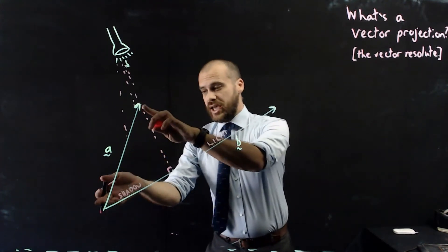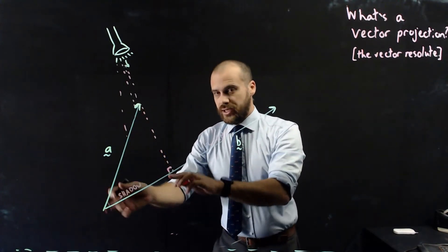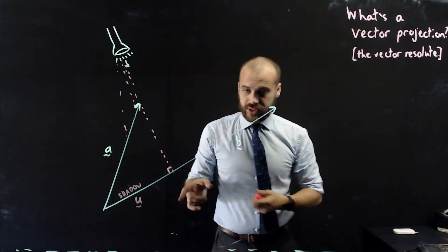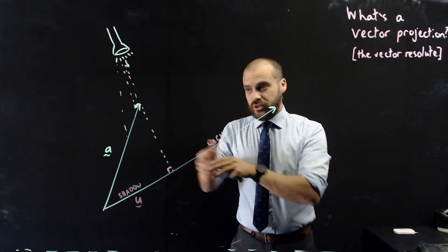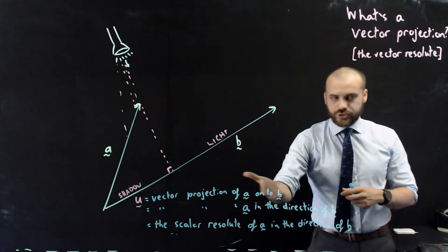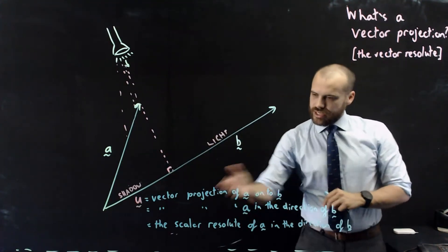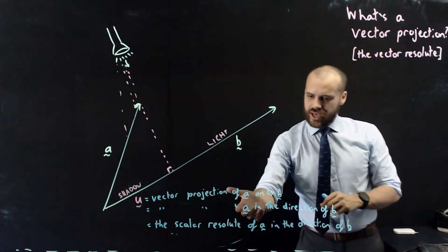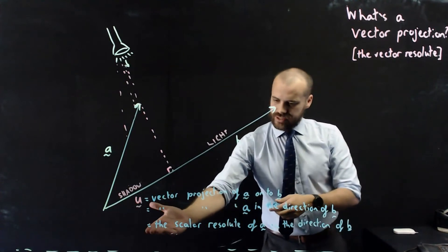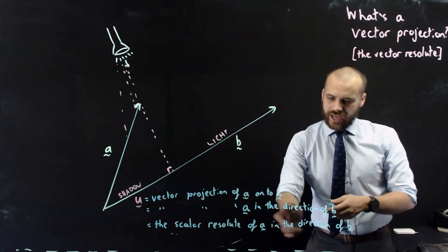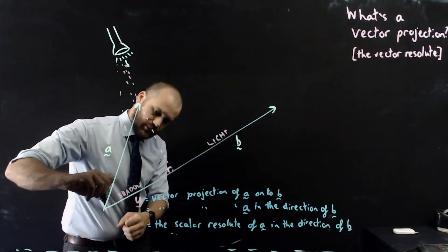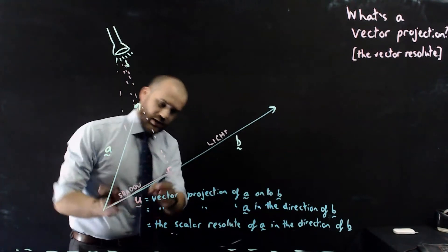Now, the vector projection of A onto B is the shadow. So this is vector U. And I can call vector U the vector projection of A onto B. We're projecting A onto B. We can also say it's the vector projection of A in the direction of B. We can also say that it is the scalar resolute of A in the direction of B. So, make no mistake, it is a vector.